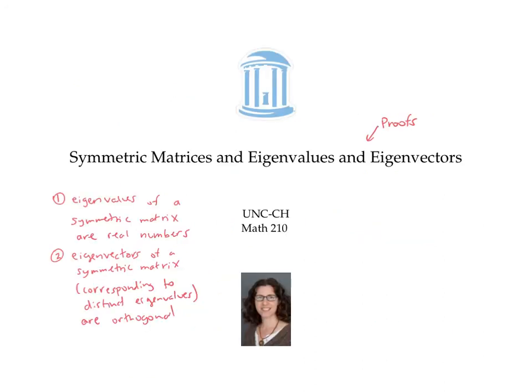So we've now proved these two facts about the eigenvalues and eigenvectors of symmetric matrices. The key components for the proof were the definition of eigenvalues and eigenvectors, the definition of symmetric matrices, and this key idea of rewriting a dot product in terms of the transpose of the first vector — turning it into a row vector matrix multiplied by the second column vector.